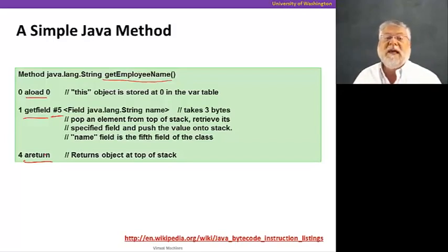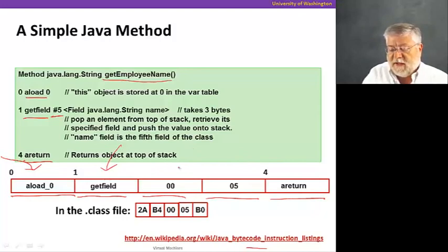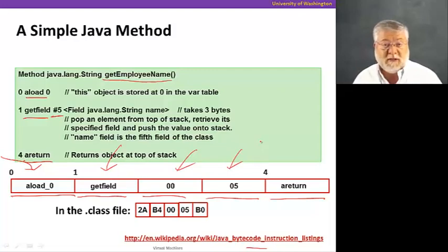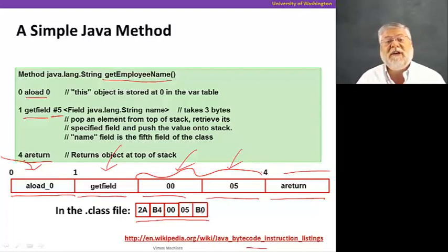That's the basic structure of a method. This URL at the bottom points you to all the possible bytecodes that might exist for a Java implementation. This code occupies five bytes of memory. aload is in the first byte. getfield is in the second byte. Now getfield is actually a bytecode that requires two more bytes to tell it which particular field in the object to go get. So these two bytes together are the number five. And then the last bytecode, the return. They might be represented by these codes. This is what is in the Java class file corresponding to this particular method.